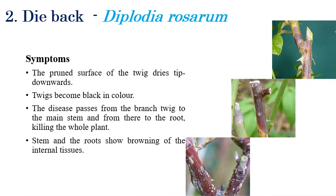Dieback is caused by Diplodia rosarum. The pruned surface of twigs dies back from the tip in a downward direction. We can clearly observe here that the pruned surface of twigs dries up.